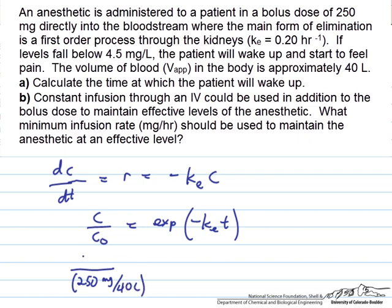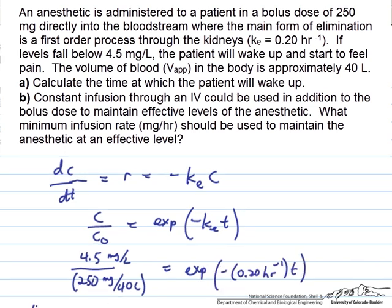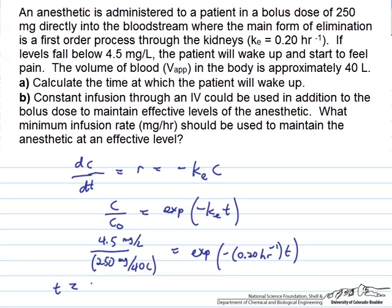The concentration that we want to know when we get to it is 4.5 milligrams per liter. We know the value of ke times t, and we can solve for t, and the time at which the dose will cease being effective is about 1.6 hours.